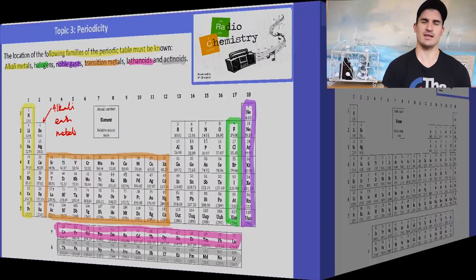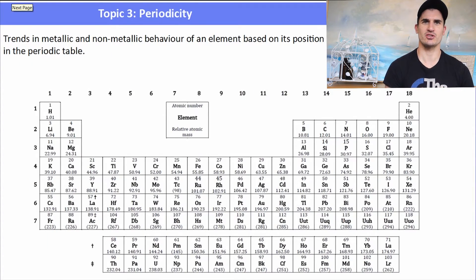Now we can use the periodic table and the location of certain elements to talk about their trend in either metallic or non-metallic behavior based solely upon its position. So remembering the staircase which separates the metals from the non-metals, we can kind of get a bit of an idea of what's going on here.